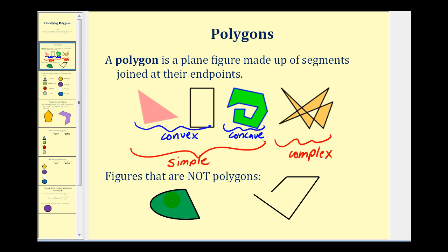These two figures were not polygons. One because an edge is curved and not a line segment, and the other because not all the segments are joined at the end points.